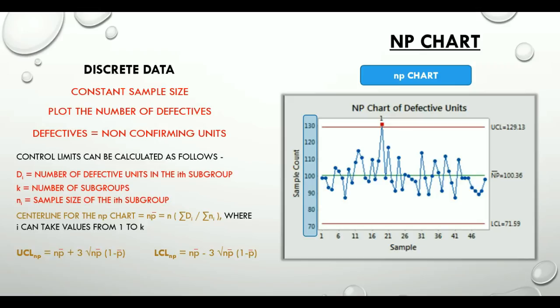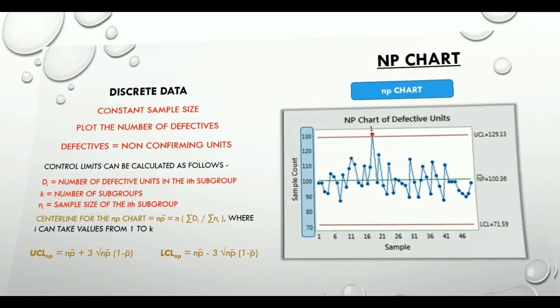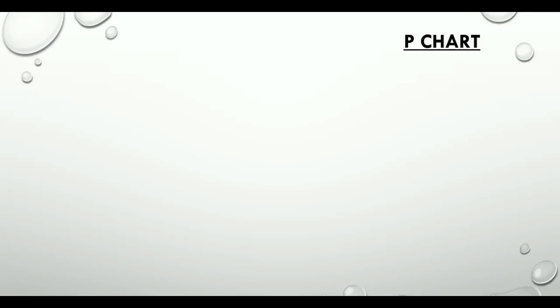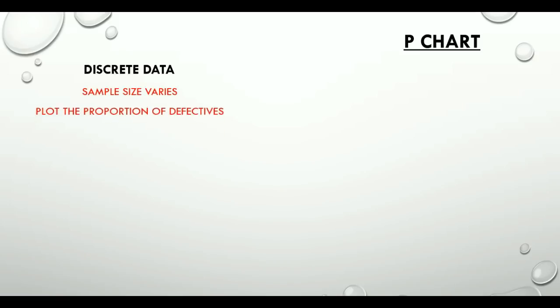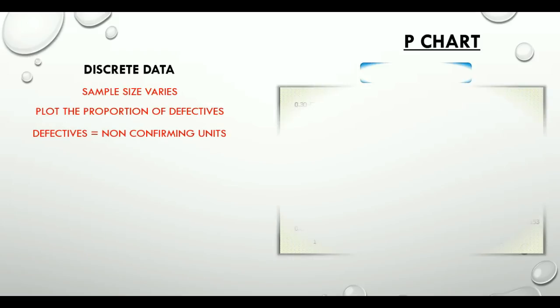Now moving on to the P chart. This chart is used when the sample size varies and it plots the proportion of defectives. Defectives, as we know, are non-conforming units. Let's quickly pull up a sample P chart. If you look at the y-axis, it shows the percentage of defectives.